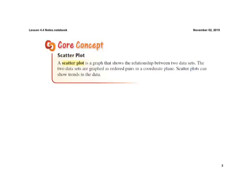Our core concept tonight is a scatter plot. A scatter plot is really a bunch of ordered pairs. It shows a relationship between two sets of data, and we're going to use these scatter plots to show trends in the data. We're going to use correlations, positive, negative.